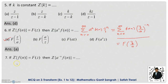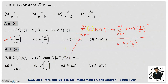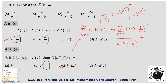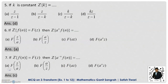Question 7: If Z{f(n)} = F(Z), then Z{A^(−n) · f(n)} — the difference from example 6 is A^n versus A^(−n). Applying the definition: summation from n=0 to infinity of A^(−n) · f(n) · Z^(−n) = summation of f(n) · (AZ)^(−n), which equals F(AZ). So option C is correct. Both examples 6 and 7 are called the damping rule in the Z-transform.